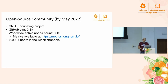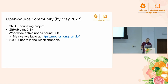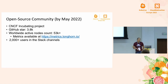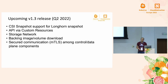On the open source community side, Longhorn is currently a CNCF incubation project with 3,800 GitHub stars. The worldwide node count is currently at 53,000 plus — you can see real-time updates at metrics.longhorn.io. This data comes from a GET call that notifies Longhorn users when a new version is available. We also have 2,000 users across the CNCF and Rancher Slack channels. For questions or requests, feel free to talk with us on Slack or file issues on GitHub. For the upcoming 1.3 release, RC1 is already out and we're aiming for official GA by end of Q2.